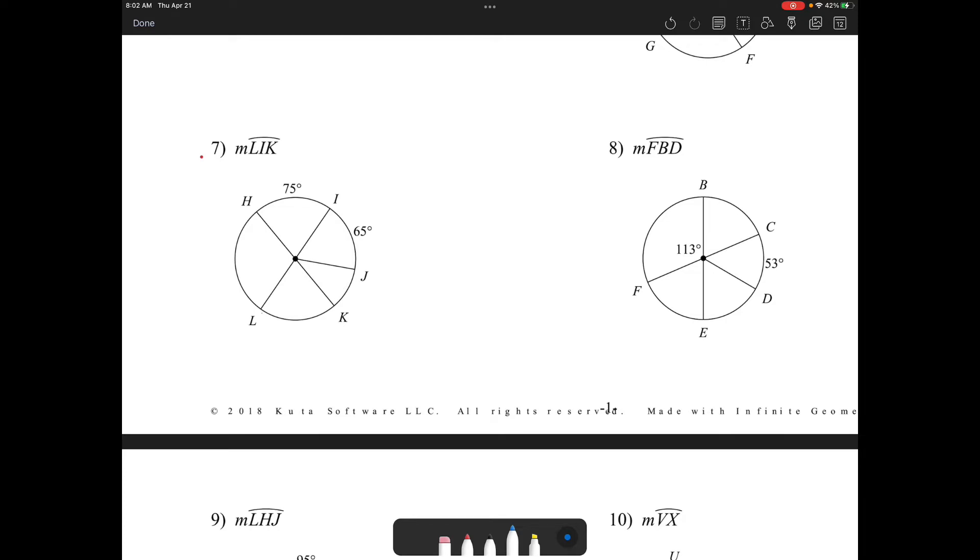We're asked to find arc LIK. So LIK would be this arc, and we want to find that entire measurement. What we know is that these two angles are what we call vertical angles. So if this angle is 75 degrees, this angle is 75 degrees, which makes this arc 75 degrees. So if I want to find LIK, LIK would be all of the circle except 75. So LIK would be 360, because that's the entire circle, minus 75 degrees.